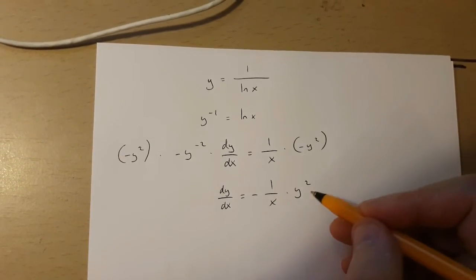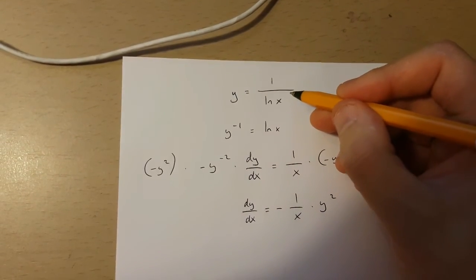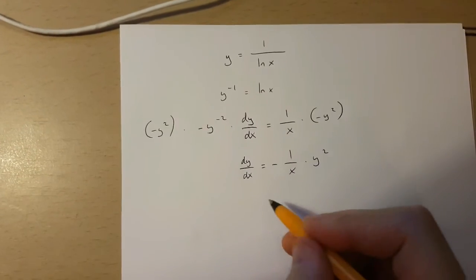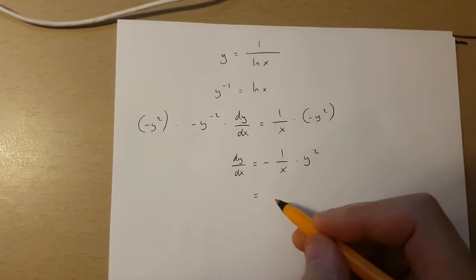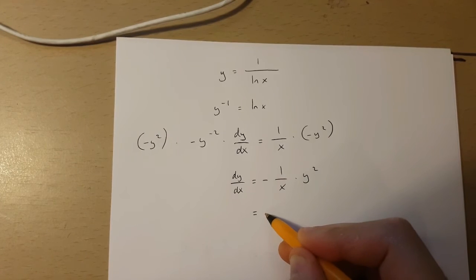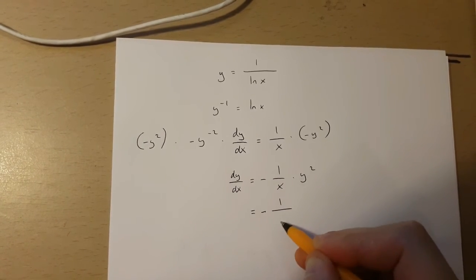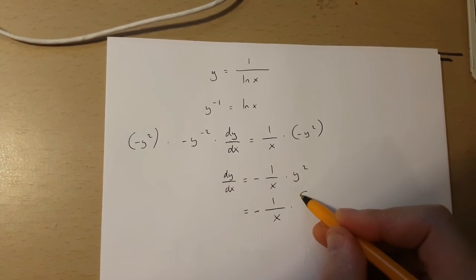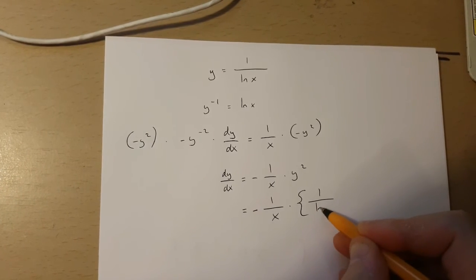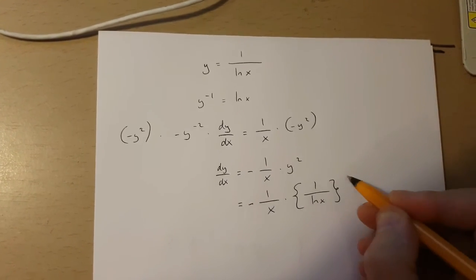Now y is 1 over ln x. So dy over dx equals minus 1 over x times 1 over ln x squared.